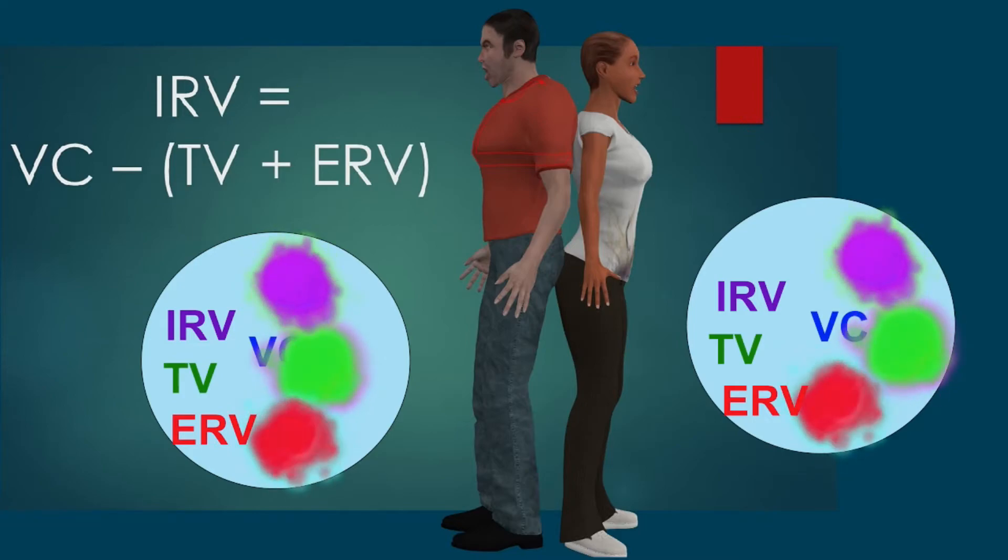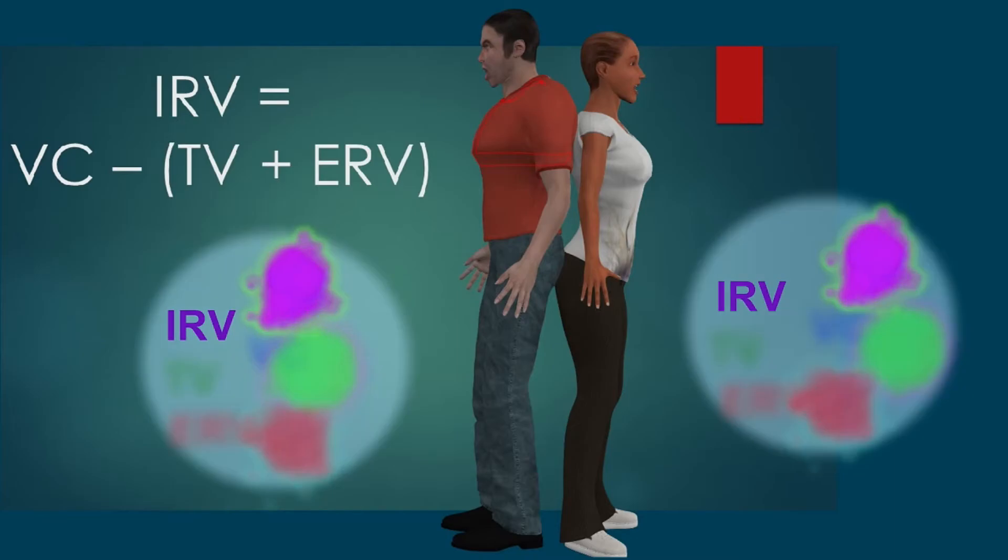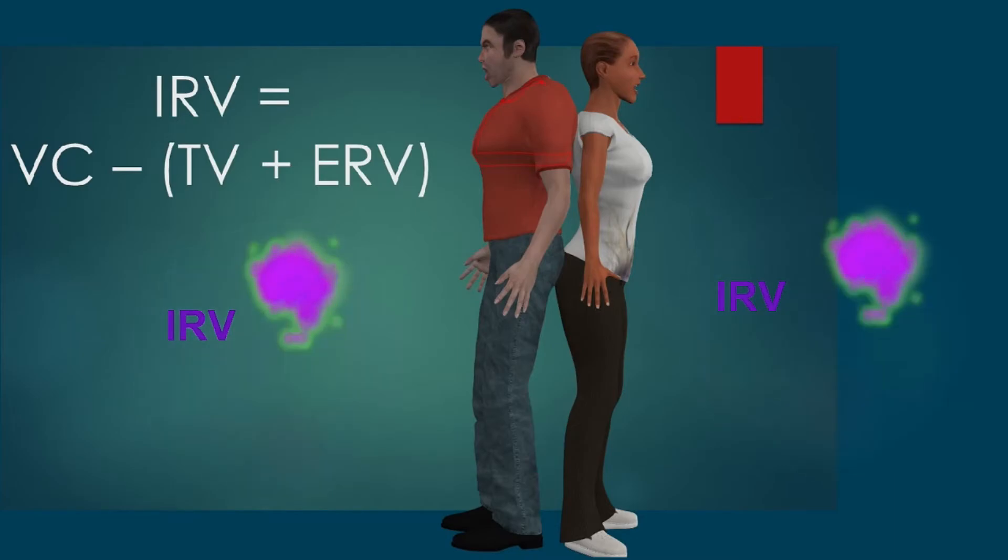And so the IRV, the one that you can't measure directly, is now equal to the VC minus the other two. So if the VC is equal to three numbers added, if you subtract two of those numbers, the ones you can measure, from the VC, you are left with the IRV that you were unable to measure directly.